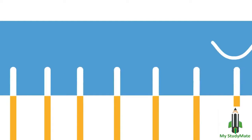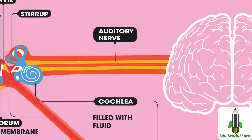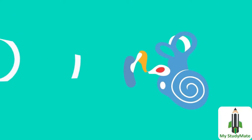This produces electrical signals which are sent to the brain along the auditory nerve. In the brain, the electrical impulses are translated into sounds which we recognize and understand.